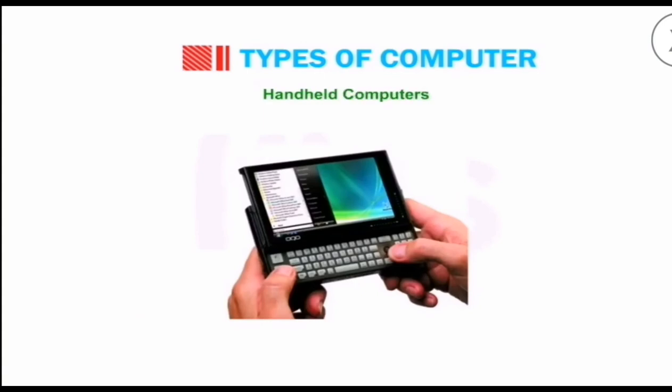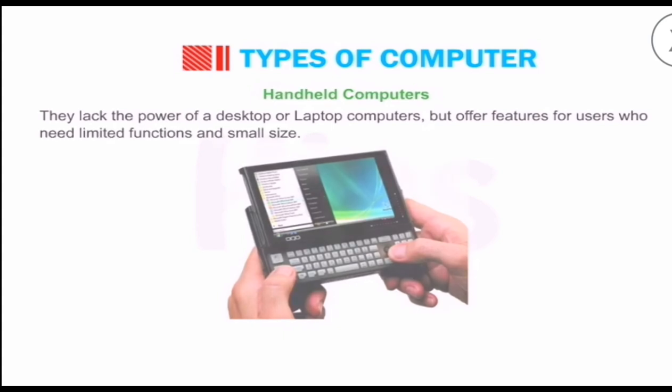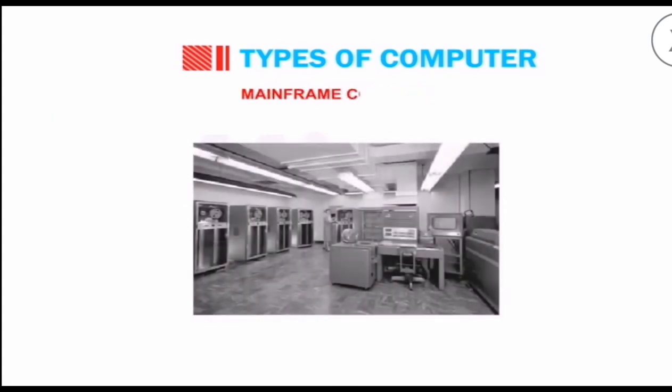Let's start with the third type: handheld computers. These are the smallest computers called PDAs, Personal Digital Assistants. They lack the power of desktop computers, but other features are very useful. They are limited in function and small in size. You can carry them anywhere in your pocket. They are also battery-operated. Let's move to the second type of computer: mini computers. These are bigger in size than microcomputers, with high processing speed. They are costlier than microcomputers. Several users can use them at the same time. They are used in banks, universities, and big organizations.